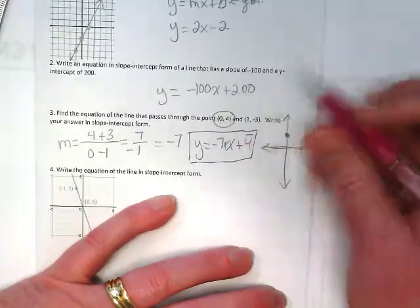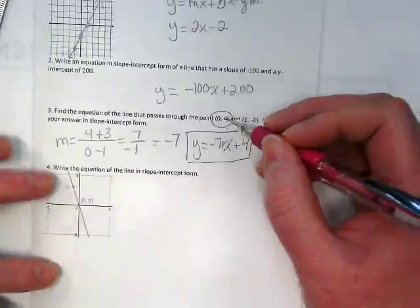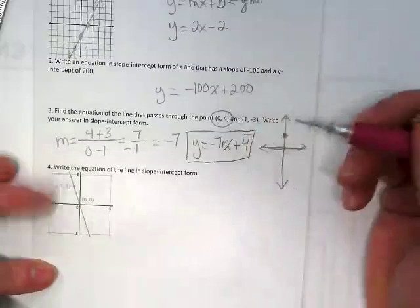So anytime I'm given a point where the 0 is in the x place and there's a number or even a 0 here, that is the y-intercept.